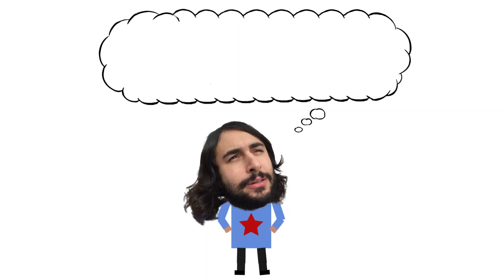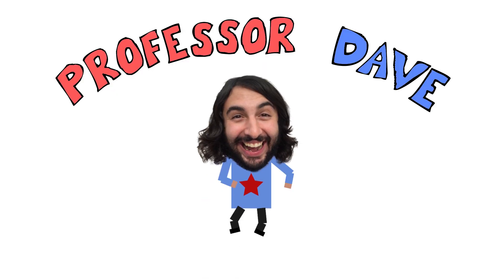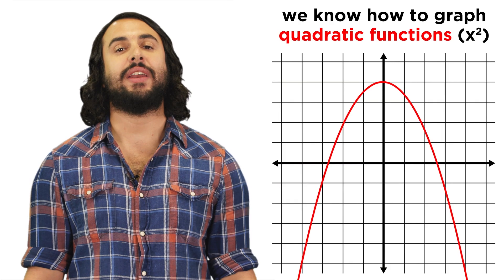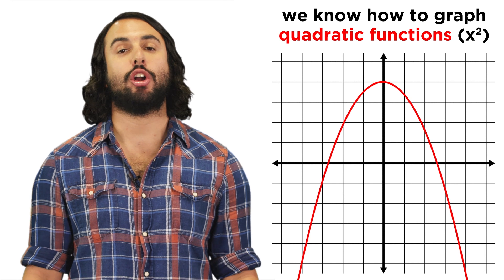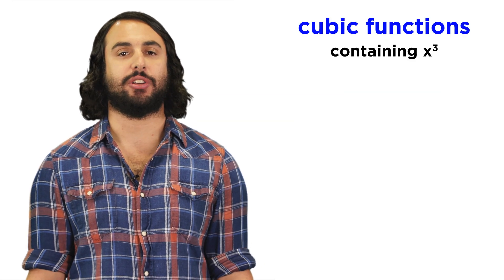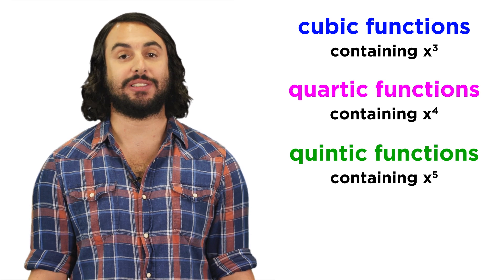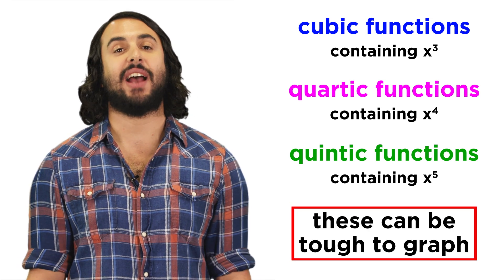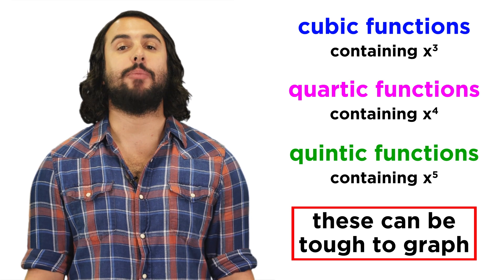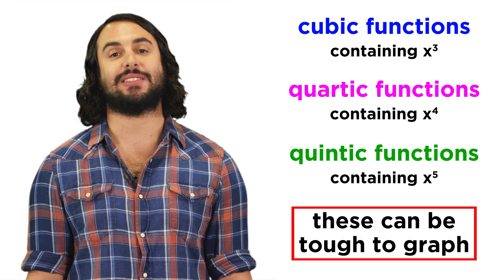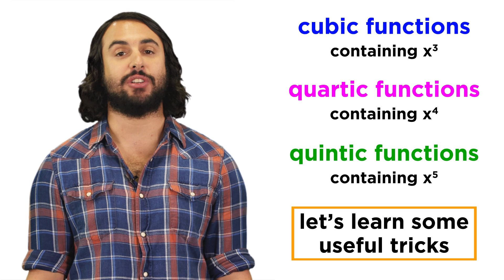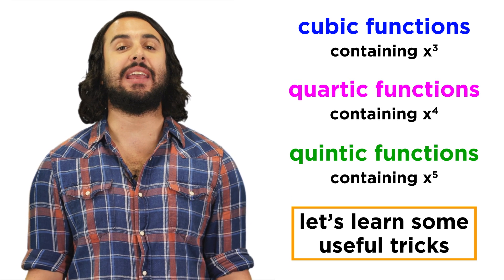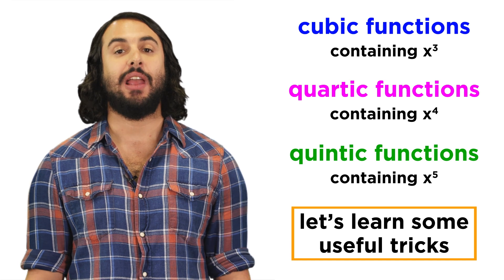It's Professor Dave, let's graph higher degree polynomials. We now know how to graph a variety of functions, including parabolas, which are second degree or quadratic functions. But what about cubic functions, or quartic, or functions of higher degree still? This can get very difficult very fast, as plotting points gets rather time consuming and the behavior of these functions is not as predictable as lines and parabolas. But there are a few tricks we can use to get rough sketches of these functions that are fairly accurate and provide some key information about the function that is useful. Let's learn these tricks now.